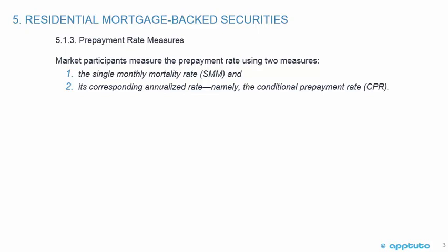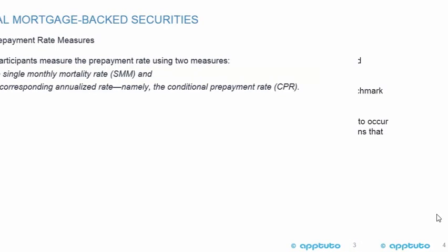The first measure is the Single Monthly Mortality Rate (SMM), and the second is its corresponding annualized rate, namely the Conditional Pre-Payment Rate (CPR).